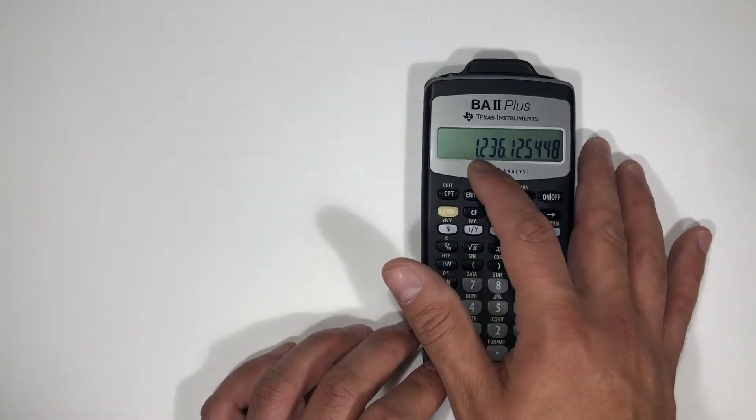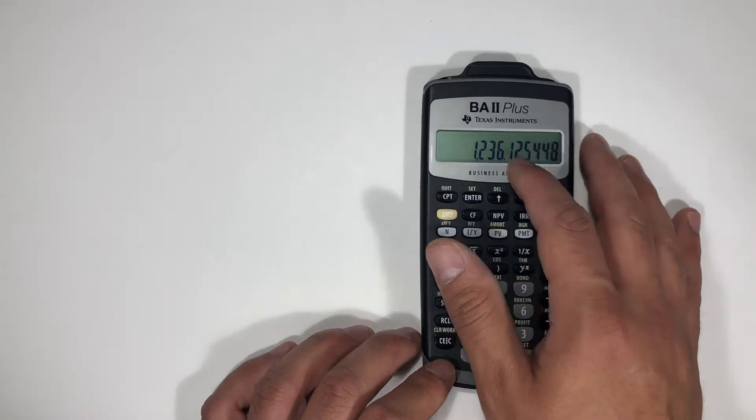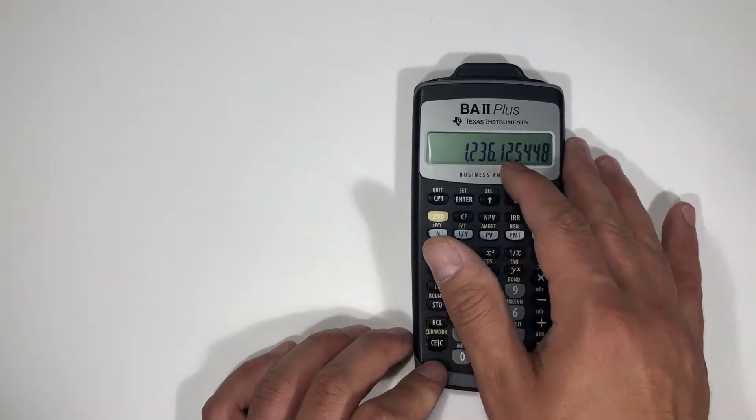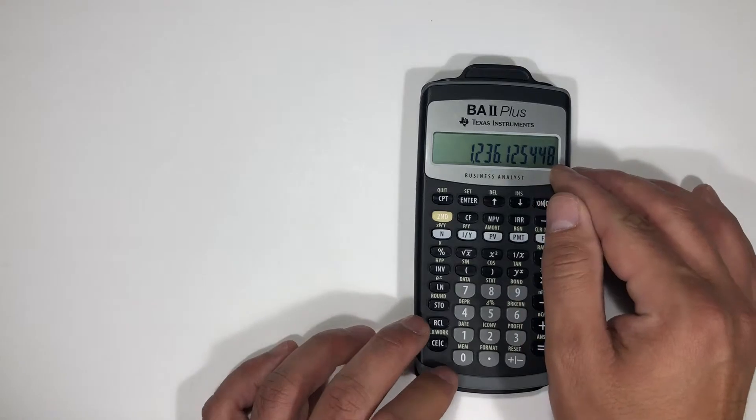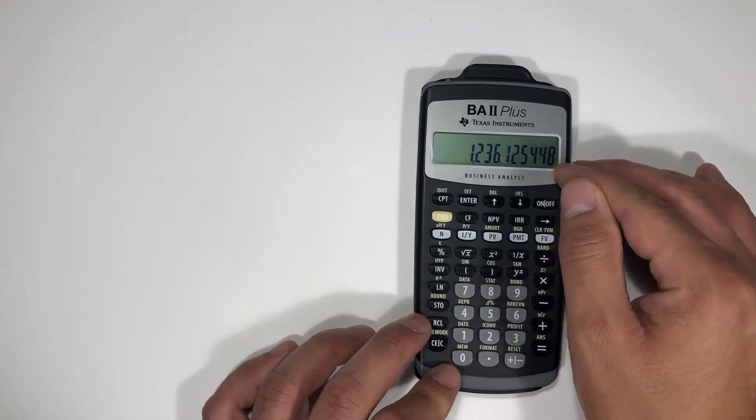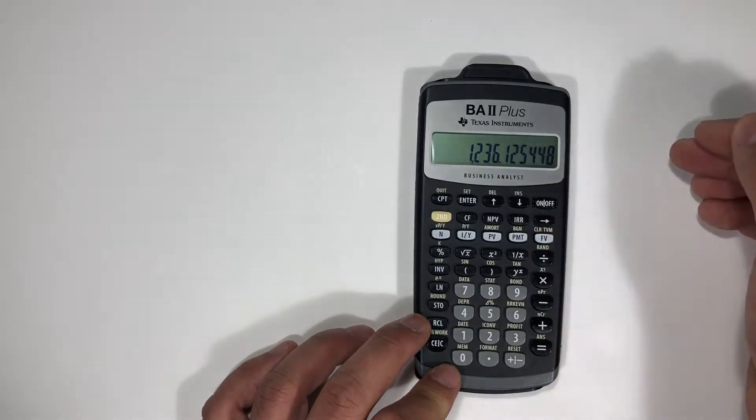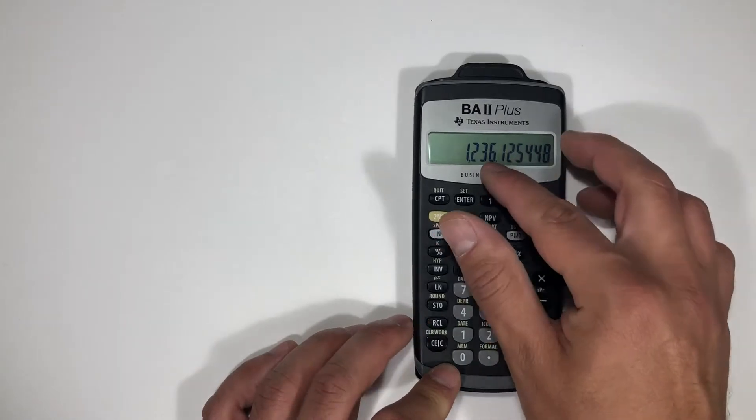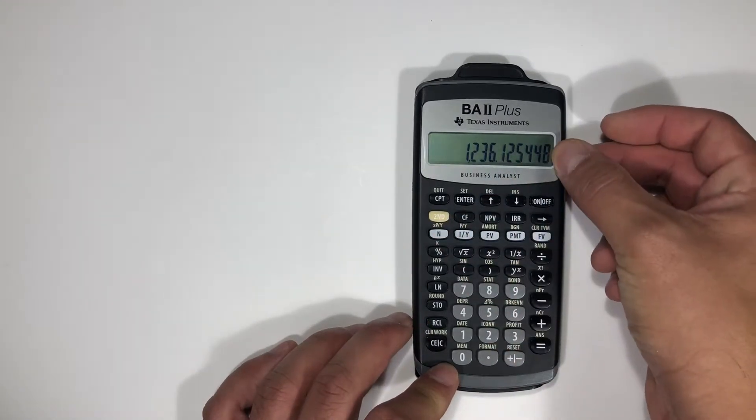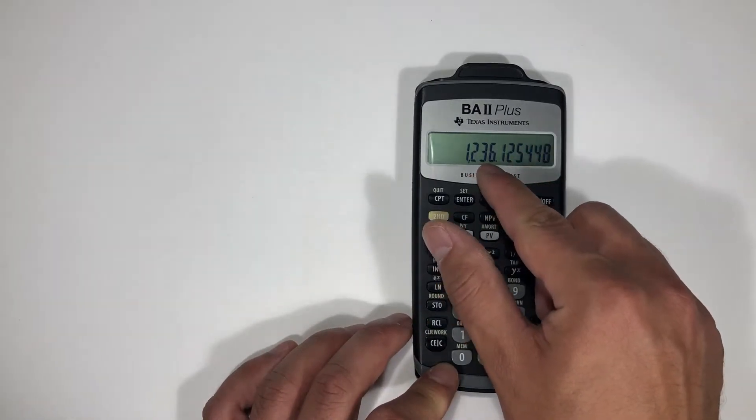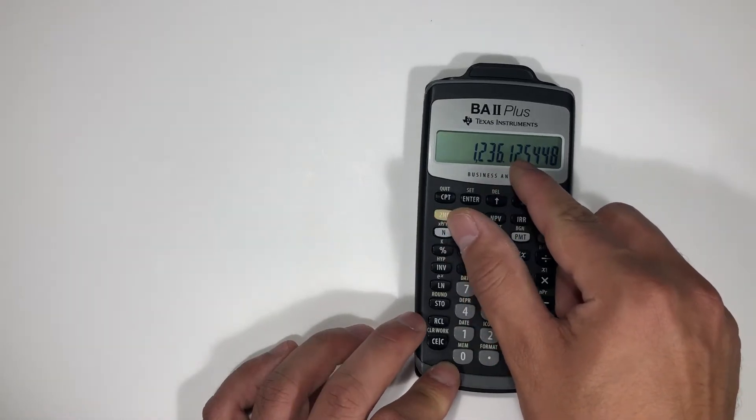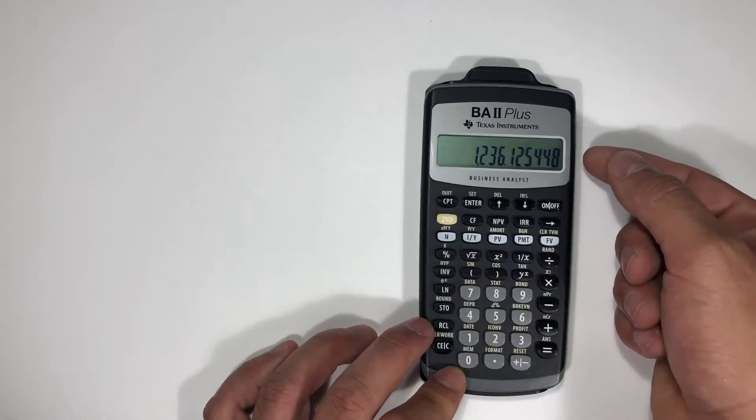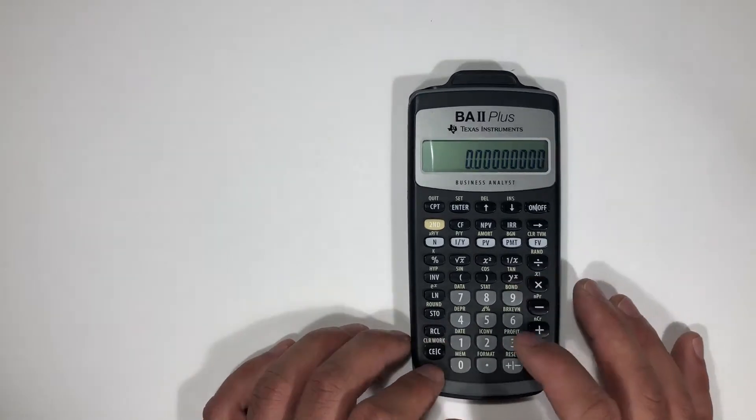If you were to do a calculation, everything behind here is stored inside the calculator. So regardless of how many places you actually have showing, it's still going to be stored within the calculator.